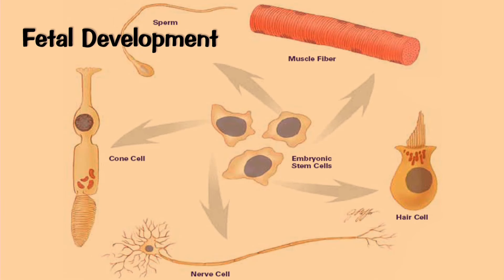Fetal development is a remarkable process wherein a single cell — at one point you were just a single cell — divides multiple times, and then the individual cells are assigned their roles in the body through a process called differentiation. Muscle cells, nerve cells, photoreceptor cells — all these cells came from the same original cell, and those specialized roles are taken on through the regulation of gene expression. Different genes are turned on or off in various cells, causing them to take on specialized roles.